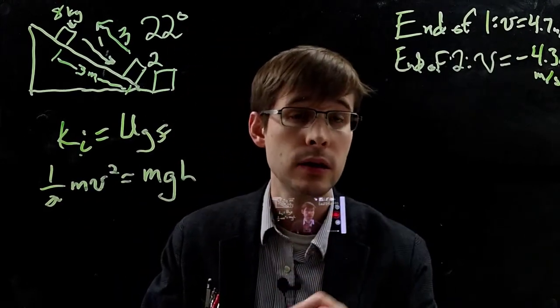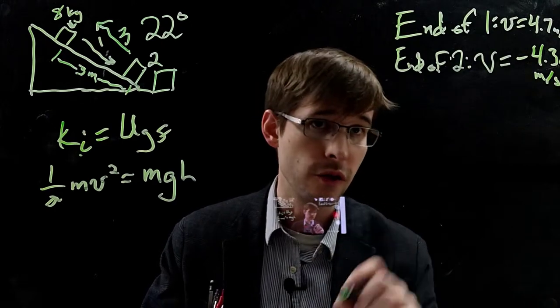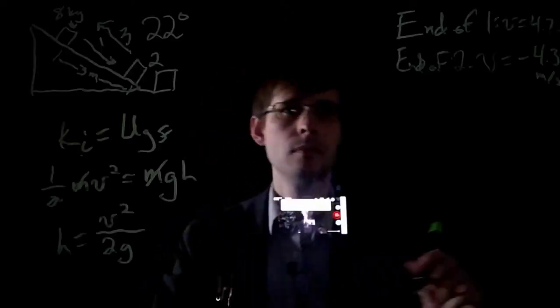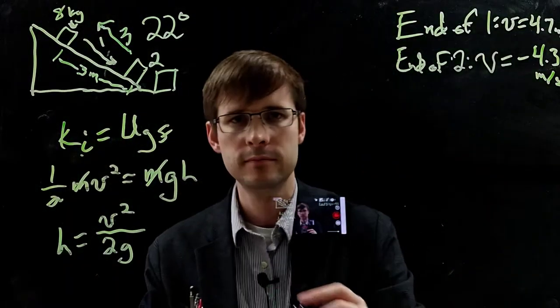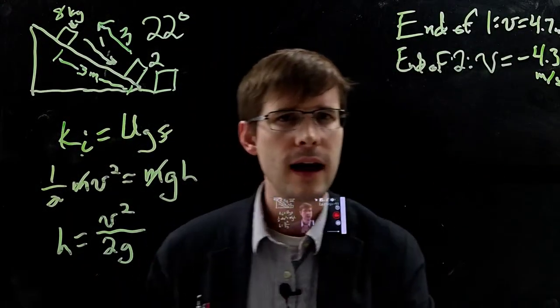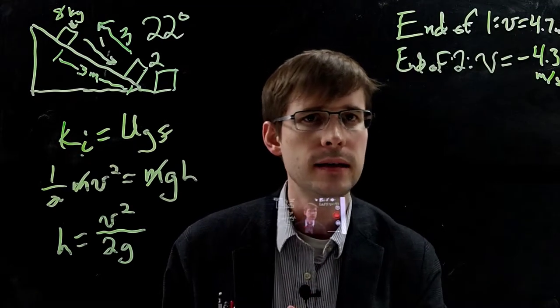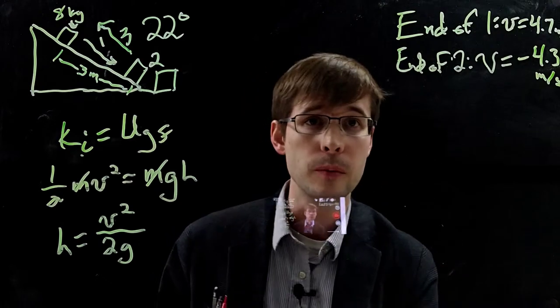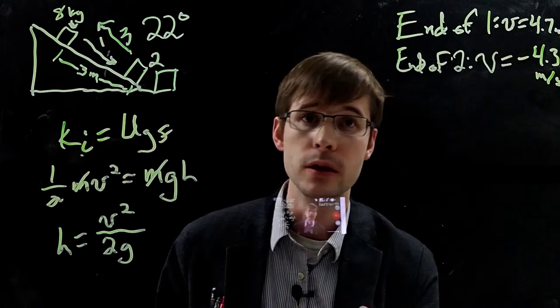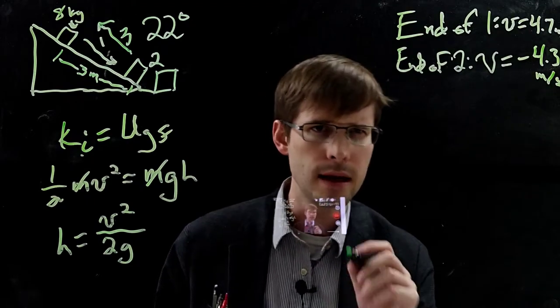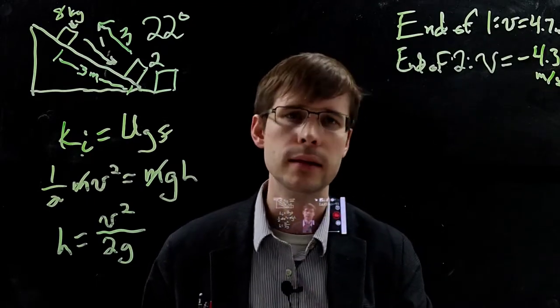And again, the masses cancel, and we can rearrange this to solve for h. So we've got this equation here. We can plug our numbers in and figure out what height it reaches. So for the velocity, we're using 4.3 or negative 4.3 meters per second squared, dividing by 2g, and g is 9.8 meters per second per second. Let's see what we get.